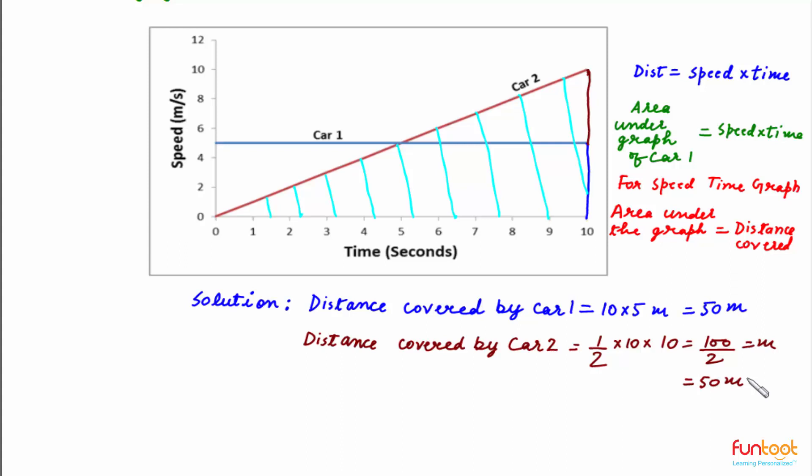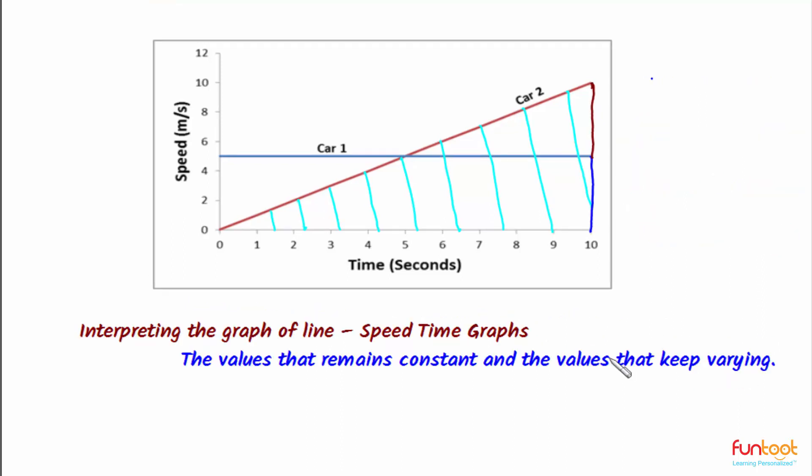We can see here that for car 1 and car 2, distance comes out to be equal, equal to 50 meters. So, in this question we learned interpreting speed time graphs. We also learned about those values which remain constant and those which keep varying.